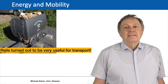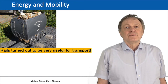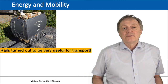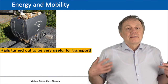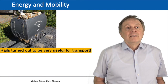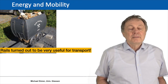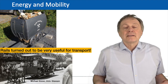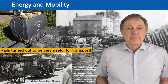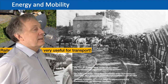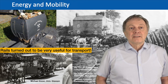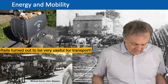Already in ancient days, people realized that rails are very useful for transport. One of the first areas was mining, because you have to carry heavy loads out of a mine constantly, and rails make transport much easier. At first, these carts were pushed by humans, then horses or donkeys were used — a kind of tram on rails. A long train of wagons needed many horses, but far fewer than without rails.